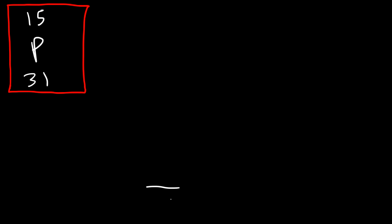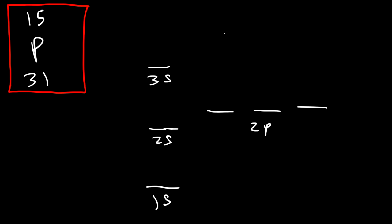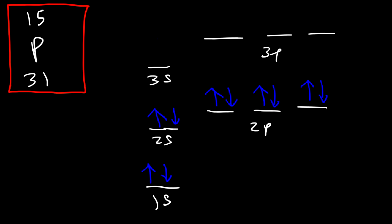Now let's try phosphorus. An atom of phosphorus has 15 electrons, so we're going to fill the orbital diagram until we reach a total of 15 electrons. Counting: 1, 2, 3, 4, 5, 6, 7, 8, 9, 10, 11, 12, 13, 14, 15. And that's it. It doesn't take much to write the orbital diagram of an element.